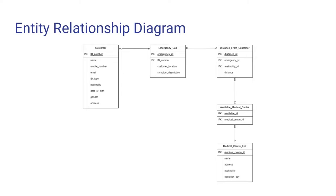Next, let's look at the ERD, which is also known as the entity relationship diagram. The customer entity consists of ID number as the primary key, and other attributes such as name, mobile number, email, ID type, nationality, date of birth, gender, and address.